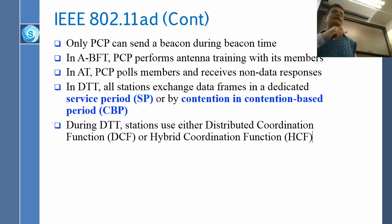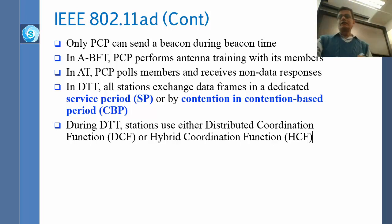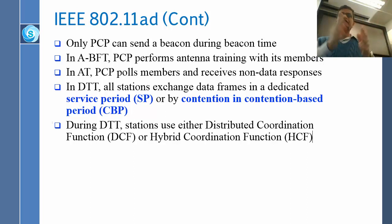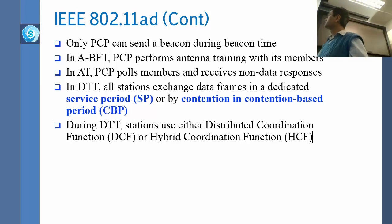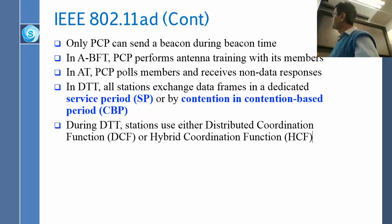Just like we had real-time and non-real-time applications in 802.11 earlier, where we had point coordination function (PCF) and distributed coordination function (DCF) — PCF has a dedicated time where nobody else can transmit, reserved for you — the distributed coordination function is the time for RTS/CTS etc. Here we have a contention period. So we have two periods: dedicated period and contention period. During DTT, stations use either DCF or hybrid coordination function (HCF). HCF is from 802.11e with priority of service.